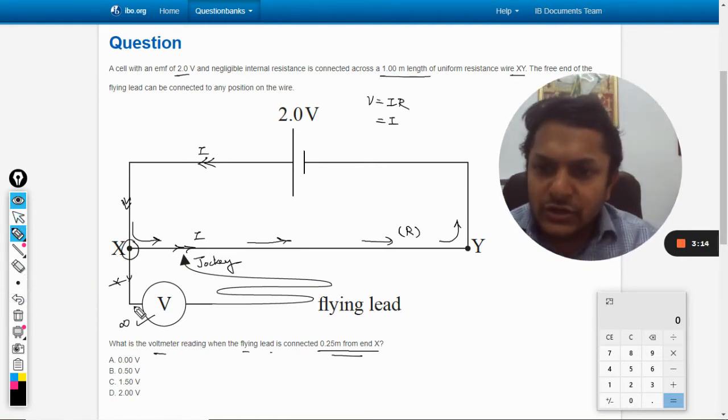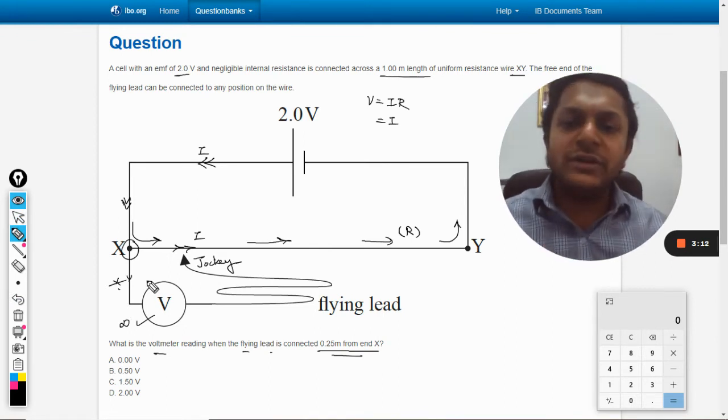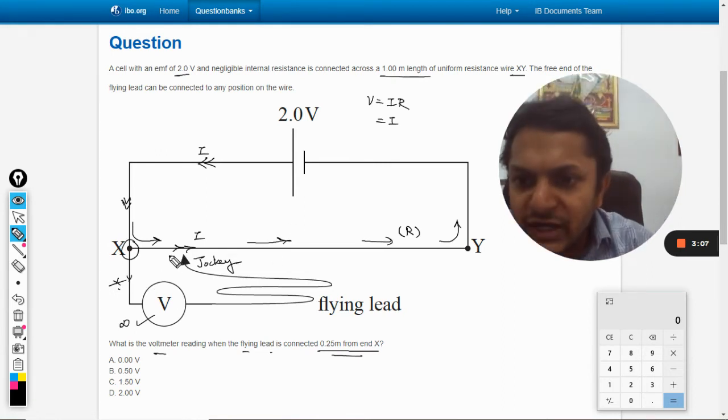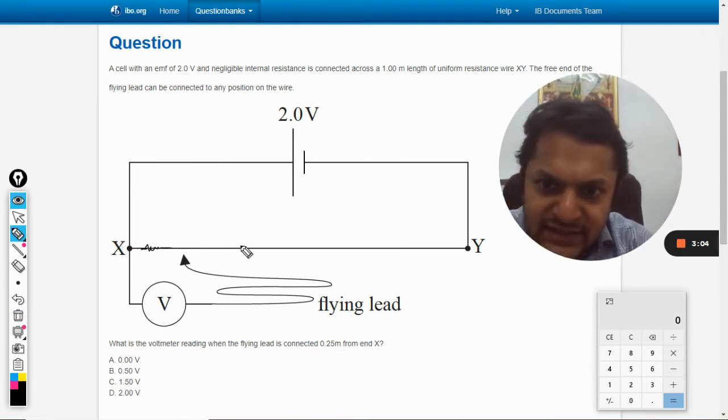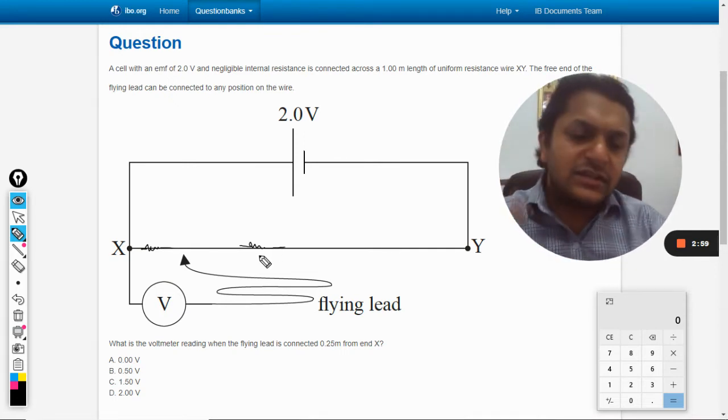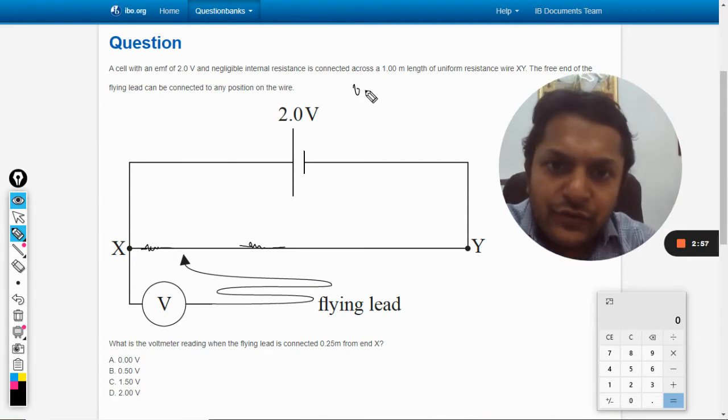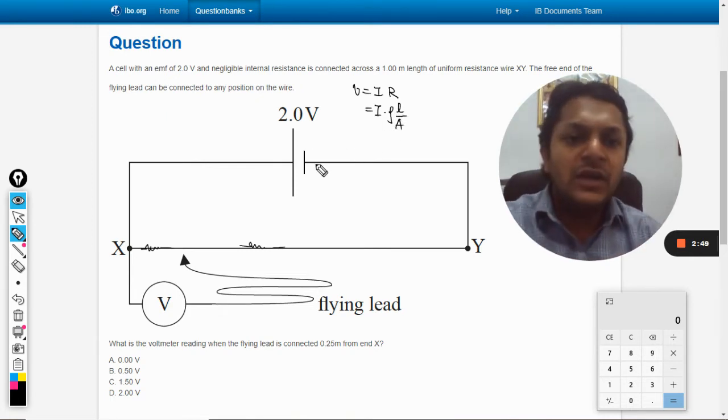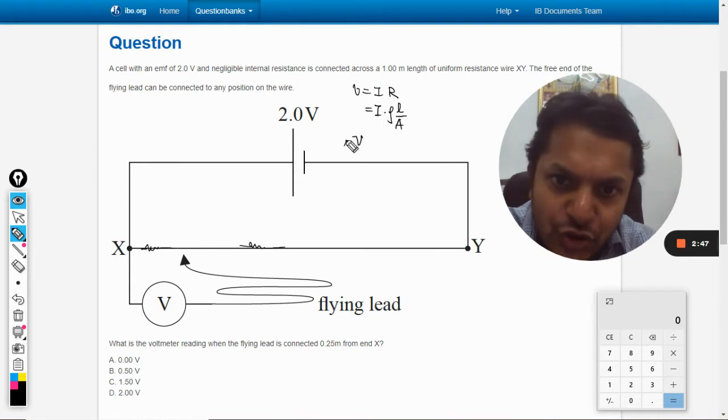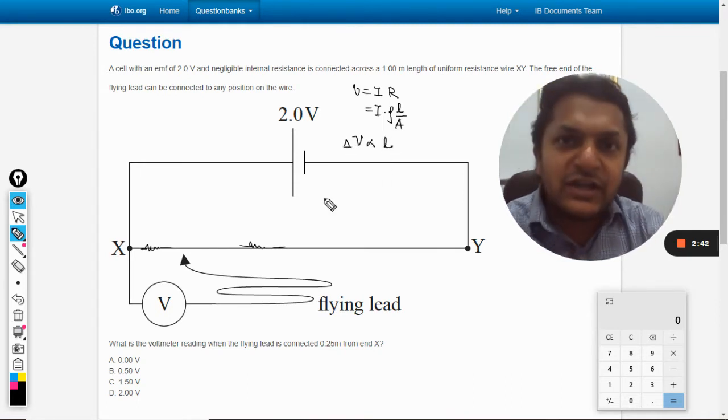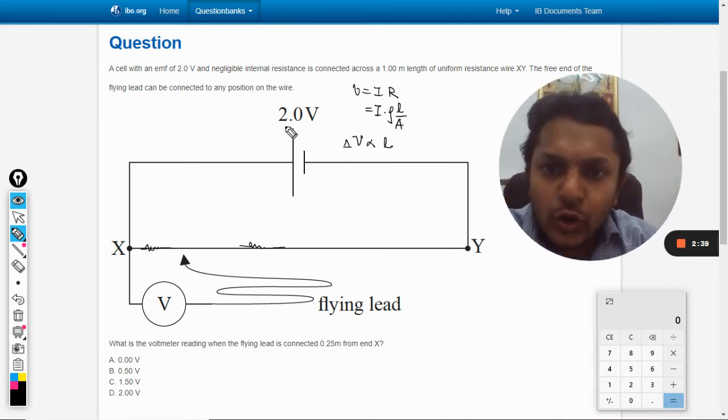There is no current here, so the voltmeter is used just to tell you the potential difference across the two points. You can divide these resistances into two parts. V is equal to IR, and R is equal to resistivity into L by A. So voltage drop is found to be directly proportional to length.